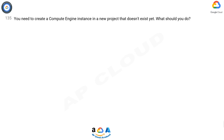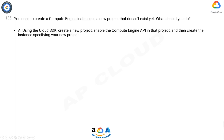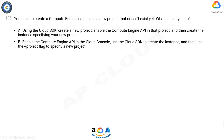You need to create a Compute Engine instance in a new project that doesn't exist yet. What should you do? A. Using the Cloud SDK, create a new project, enable the Compute Engine API in that project, and then create the instance specifying your new project.